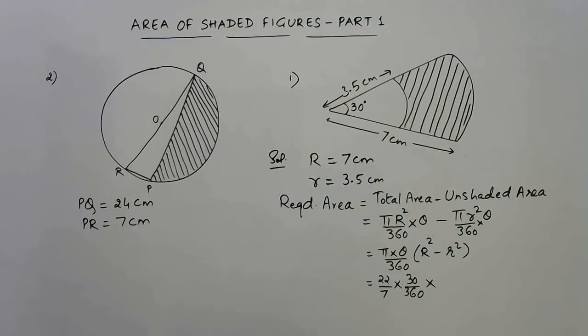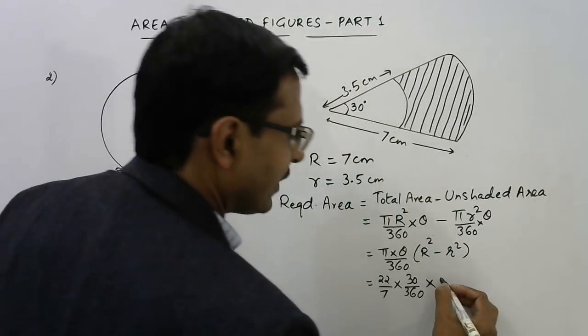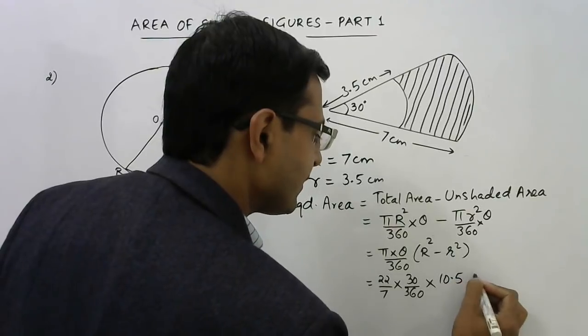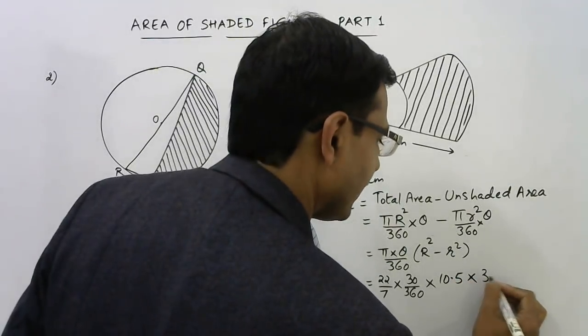So R plus r is 10.5 and R minus r is 3.5.